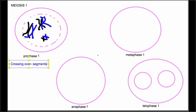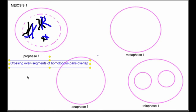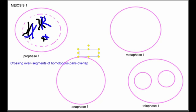Segments of homologous pairs overlap. And when crossing over happens, something else can happen called genetic recombination. Genetic recombination is when a piece of one chromosome in a pair pops off and switches places with the homologous segment in the homologous chromosome of that pair.